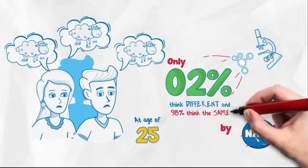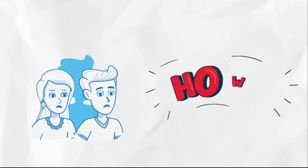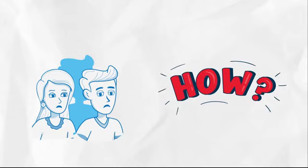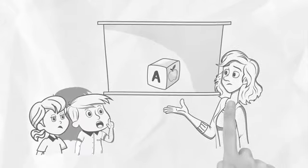And 98% think the same. So, how does the education system make every child the same? Let's go back to the Apple example.